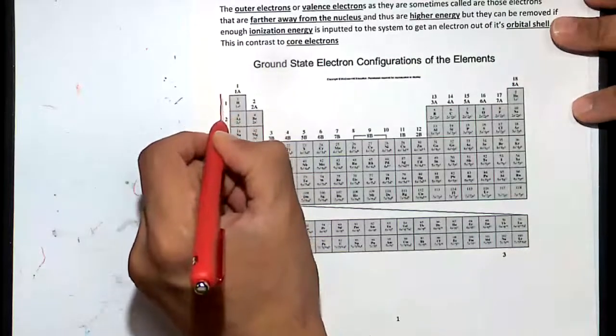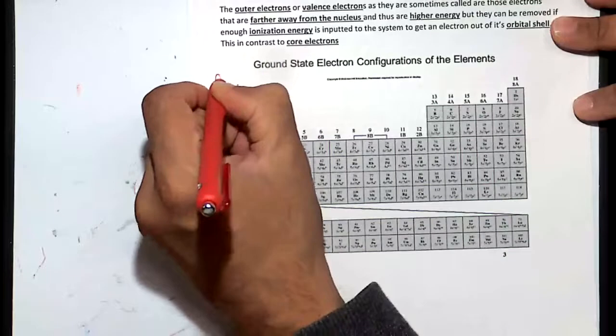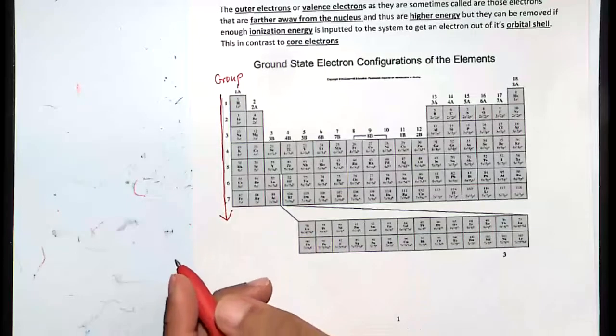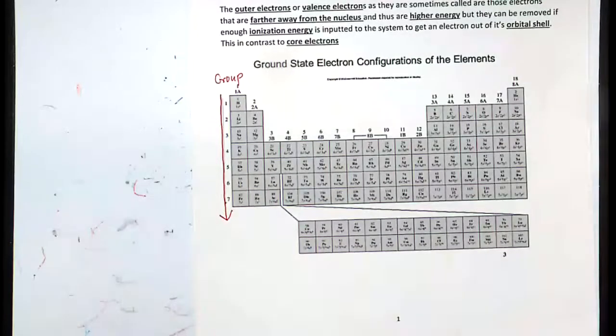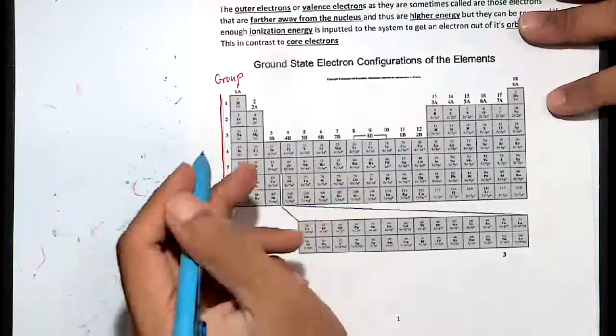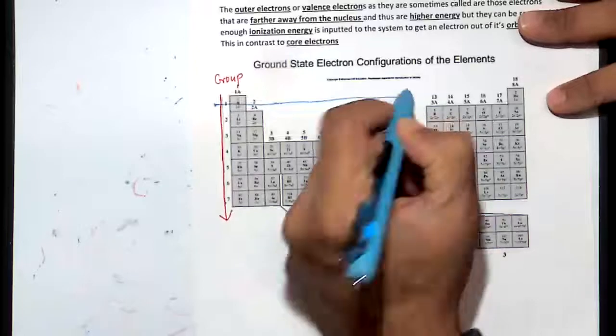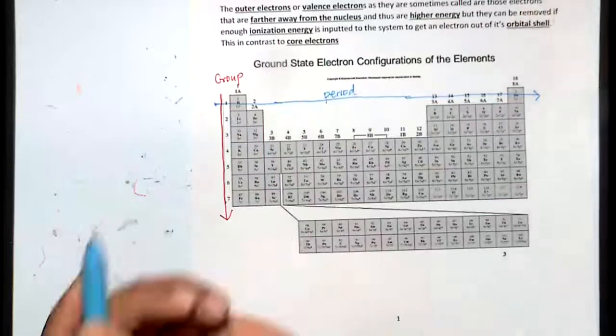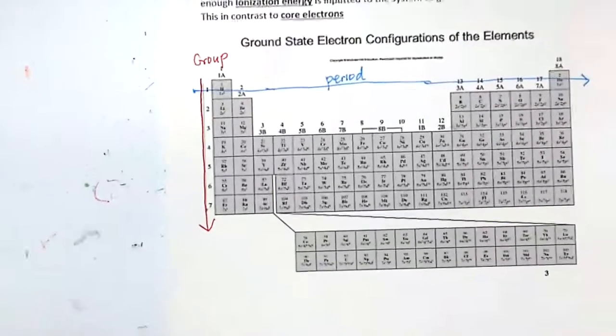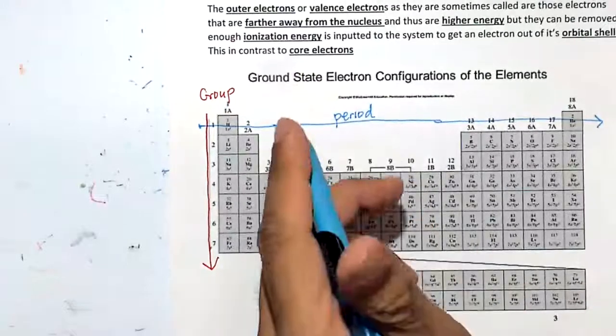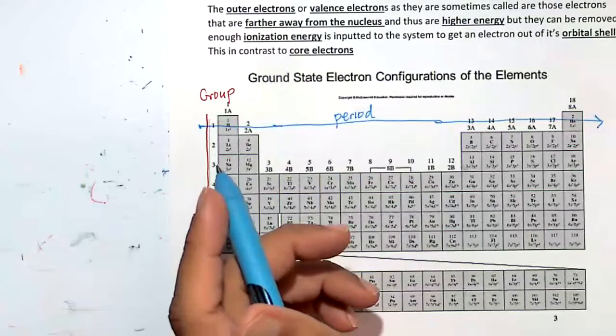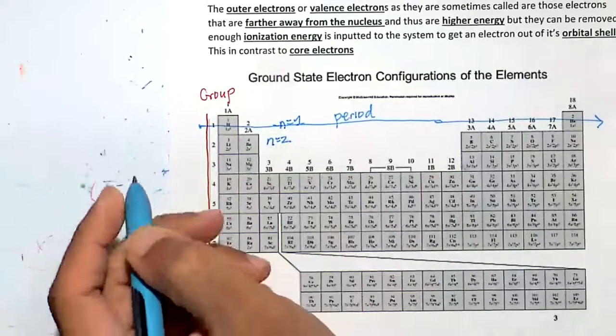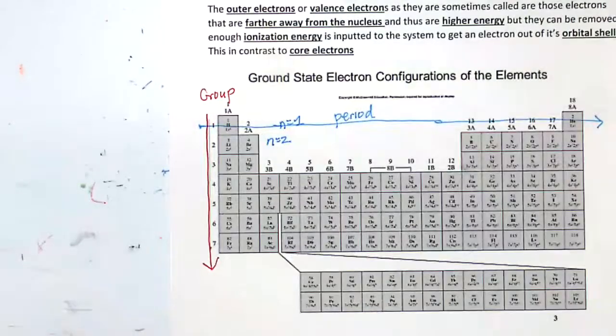Going down is called a group. Going down the periodic table is called a group. Going across the periodic table is called a period.